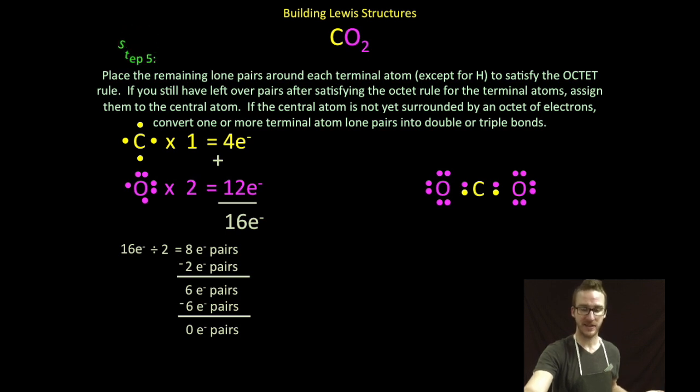So what do we do in a situation like this? Here's where we create double and triple bonds. We're going to take a lone pair from one of our terminal atoms and make it share that additional pair.